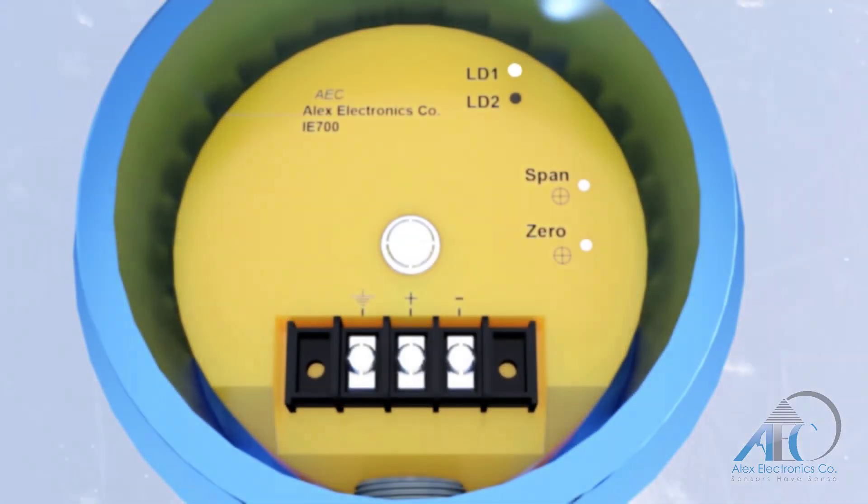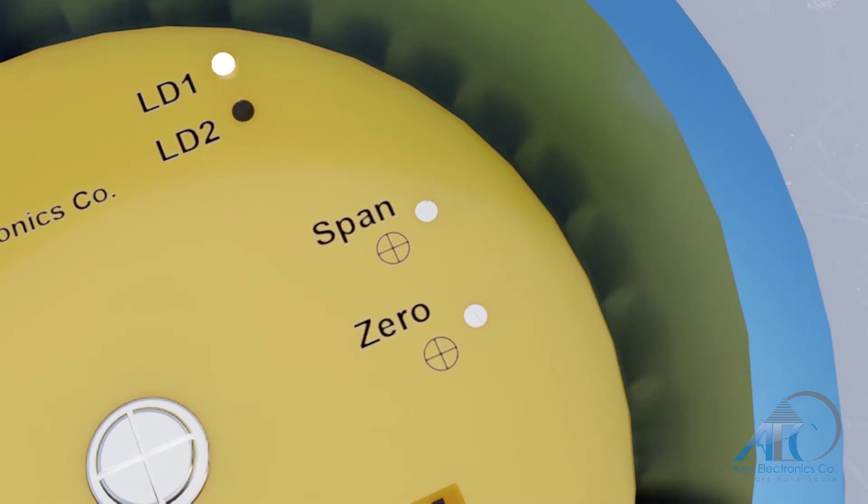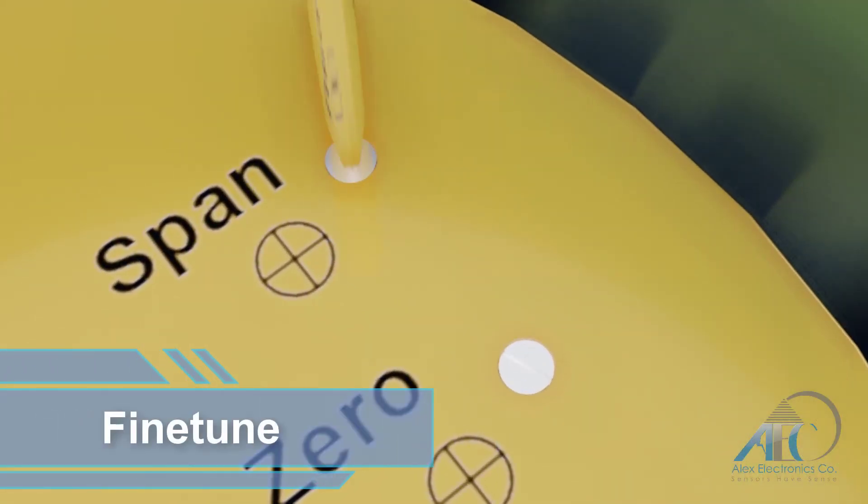If needed, you can fine-tune the zero and span by turning the potentiometers clockwise to increase or counterclockwise to decrease.